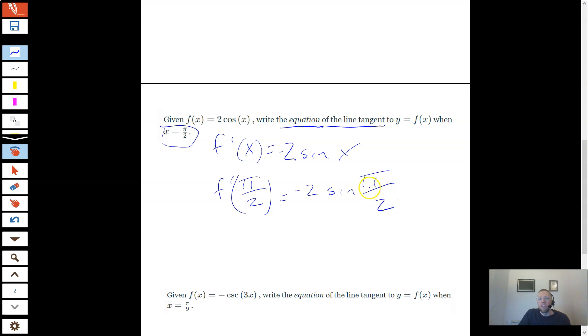Well, we just ran into sine of π/2. So sine of π/2 is 1, so this becomes negative 2 times 1. So that was my derivative. That's f prime. That's also the slope of my tangent line.